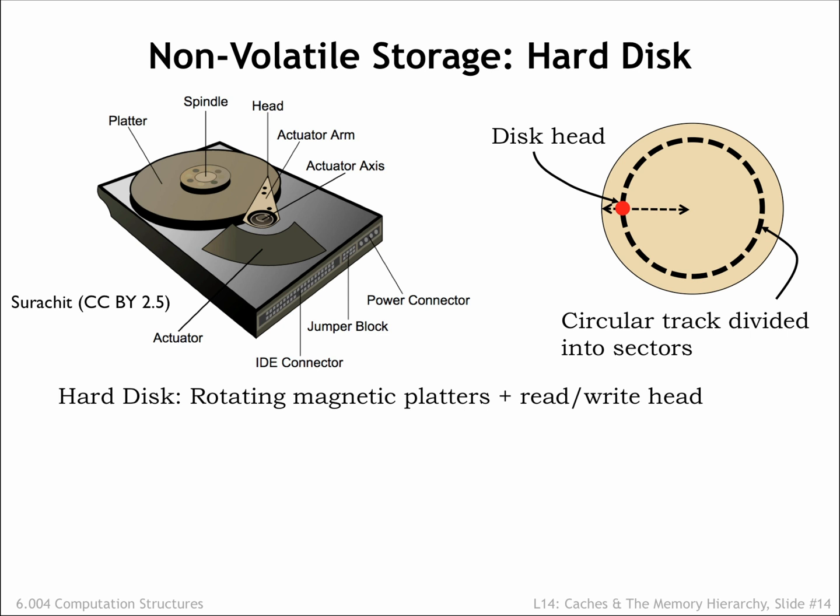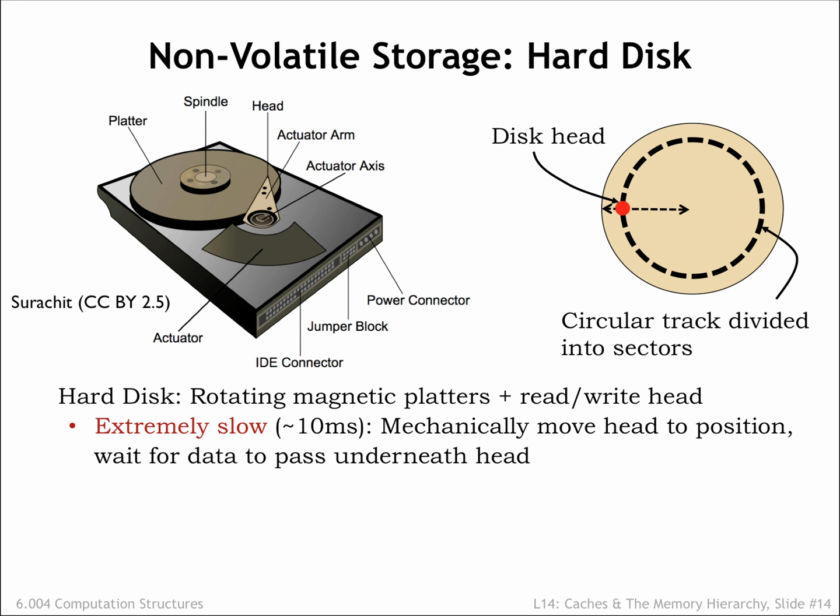The read-write head is mounted on an actuator that allows it to be positioned over different circular tracks. To read a particular sector of data, the head must be positioned radially over the correct track, then wait for the platter to rotate until it's over the desired sector. The average total time required to correctly position the head is on the order of 10 ms, so hard disk access times are quite long.